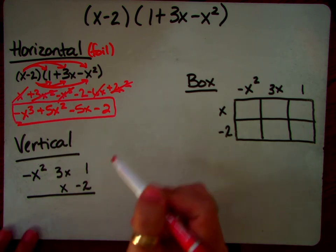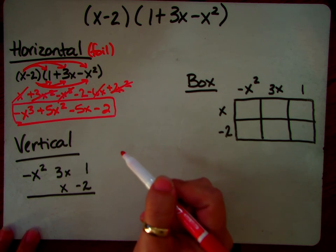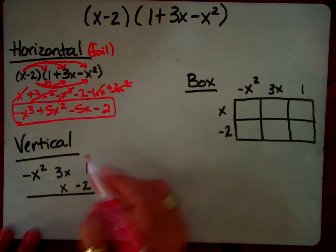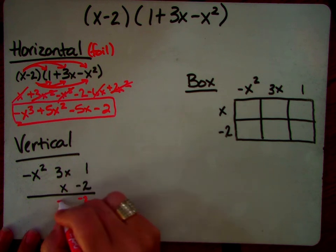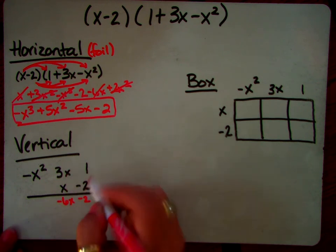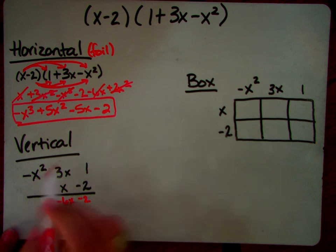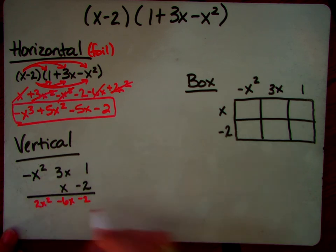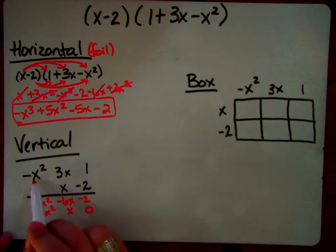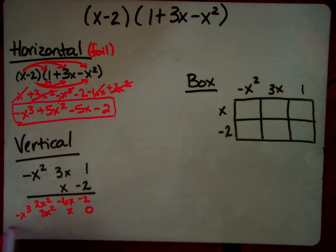The vertical method is very similar to how you probably have learned multiplication in elementary school. Negative 2 times 1 is negative 2. Negative 2 times 3x is negative 6x. Negative 2 times a negative x squared is a positive 2x squared. Okay, we put our 0. Now we start with our x. x times 1 is x. x times 3x is 3x squared. x times negative x squared is a negative x cubed. Now we're just going to add negative 2, negative 5x, positive 5x squared, and a negative x cubed. So I got my same answer. I just did it a different method.